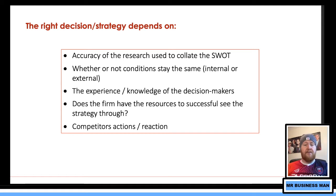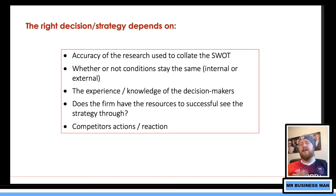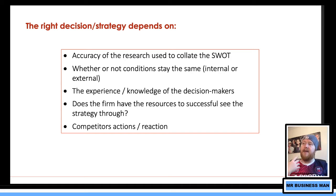Does the firm have the resources to successfully see the strategy through? If you identify weaknesses and threats and decide to spend £2.4 million addressing them, but you don't have the money, you'll need a different approach. And remember — competitors will be doing their own SWOTs and making their own strategic decisions. They'll be coming after you as much as they can. You've got to be aware that they might not want to start a price war, for example.